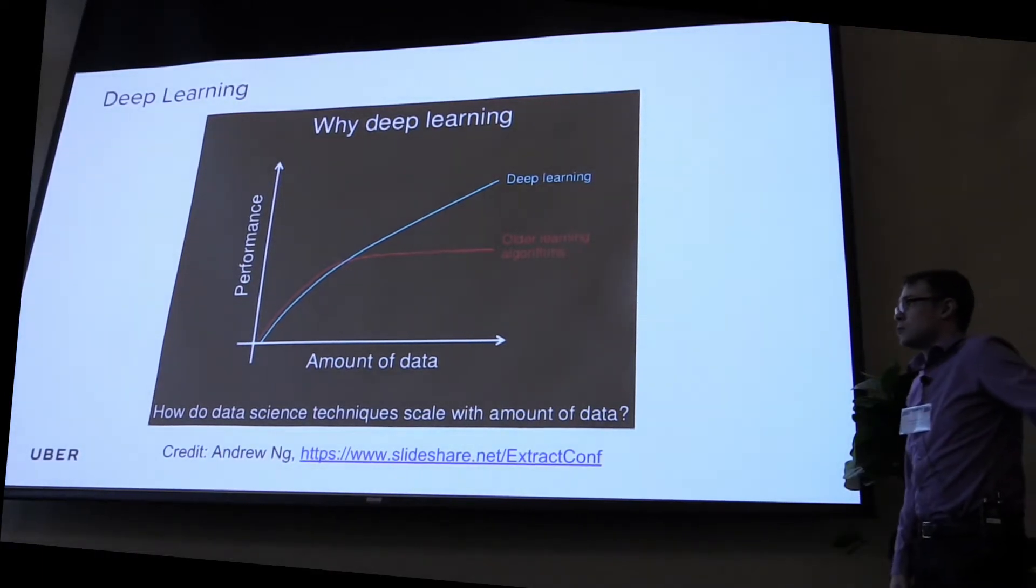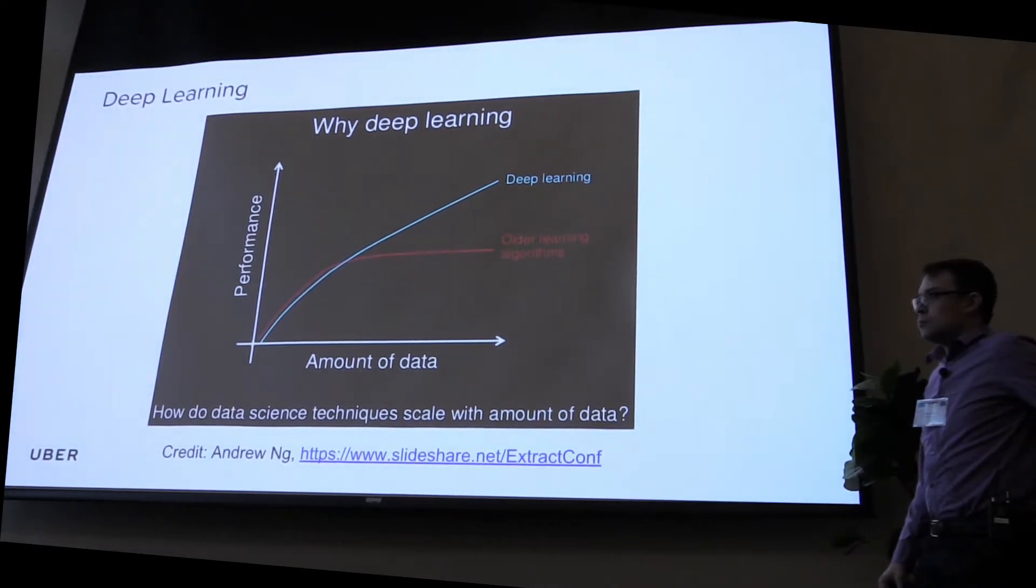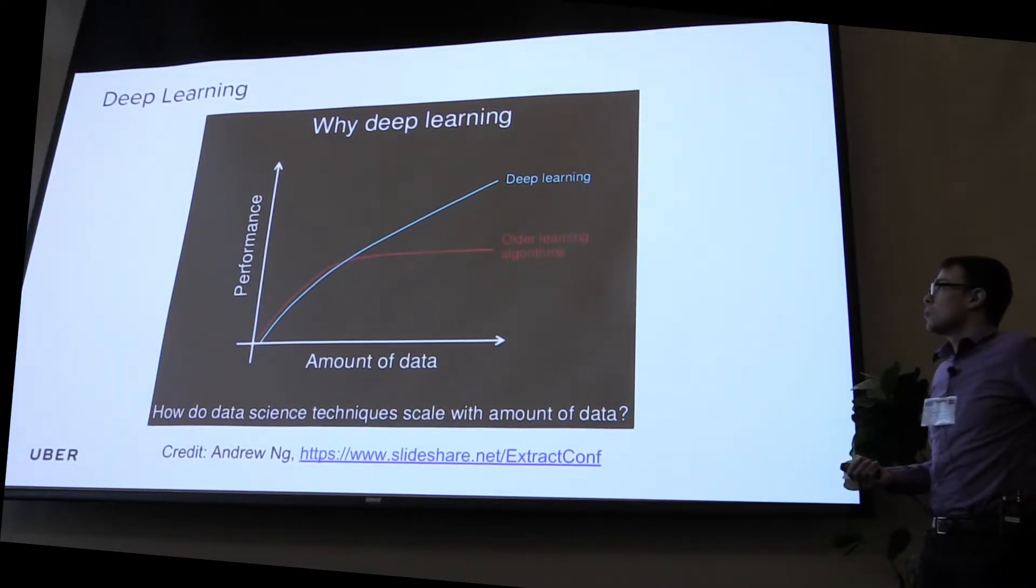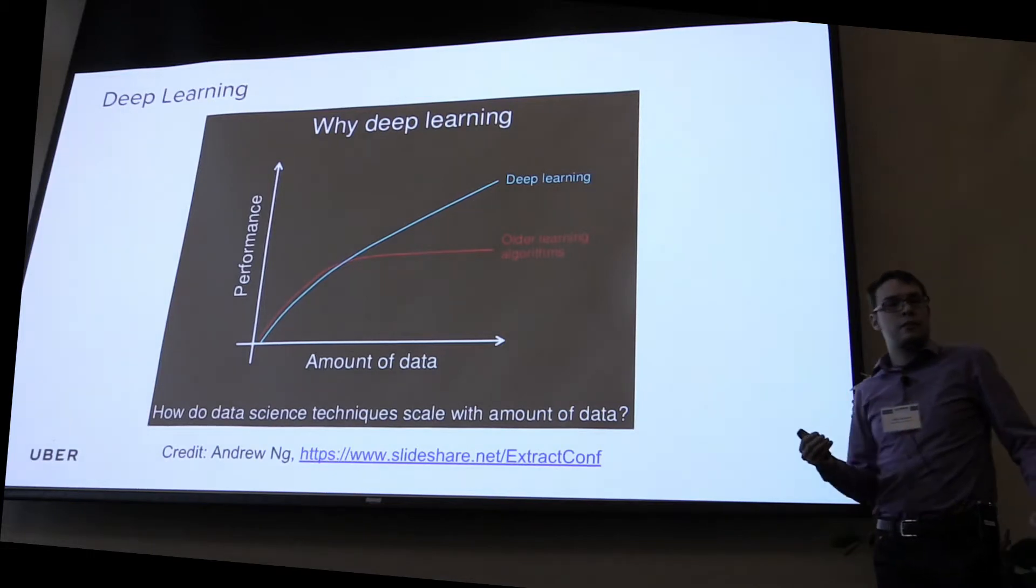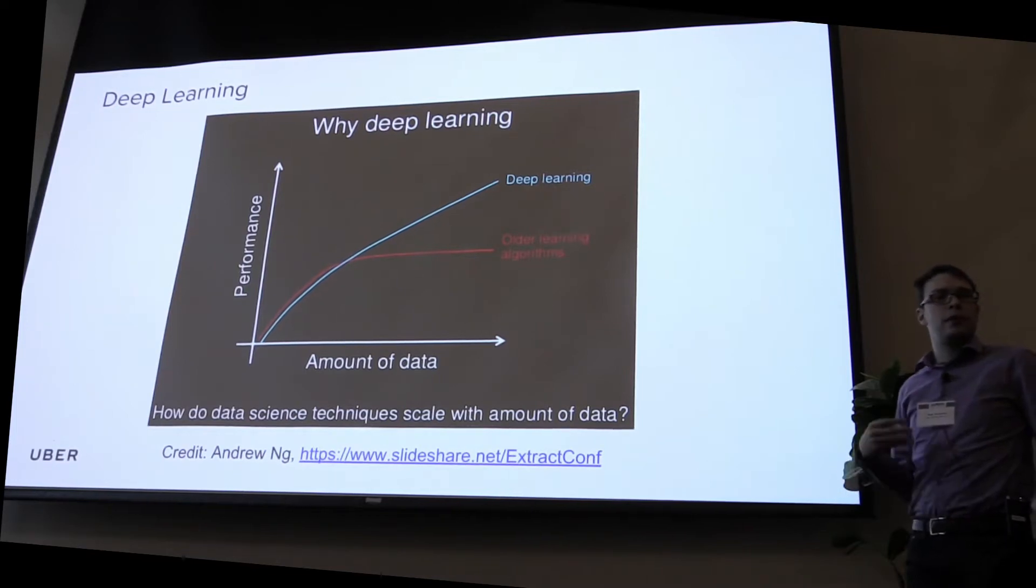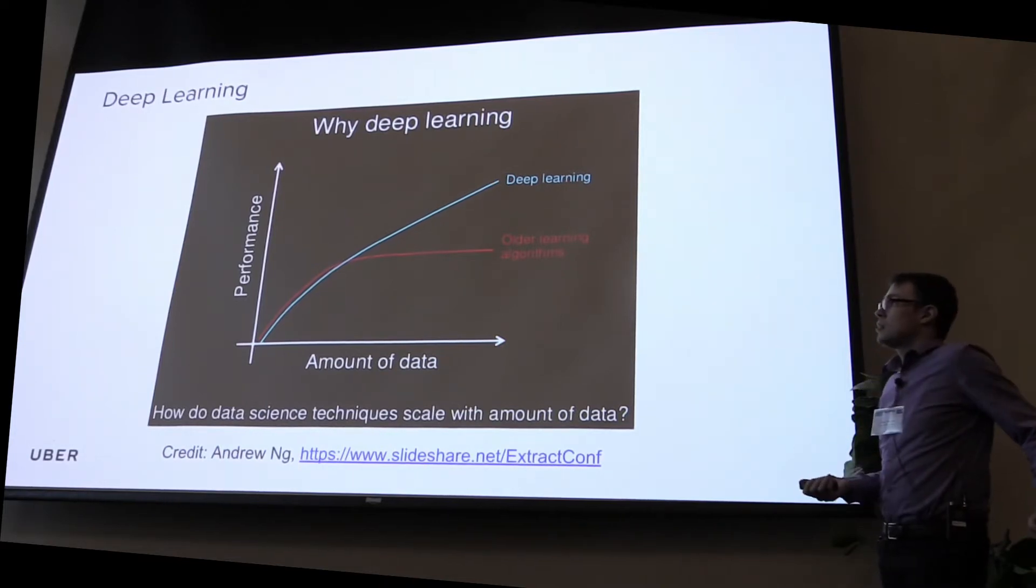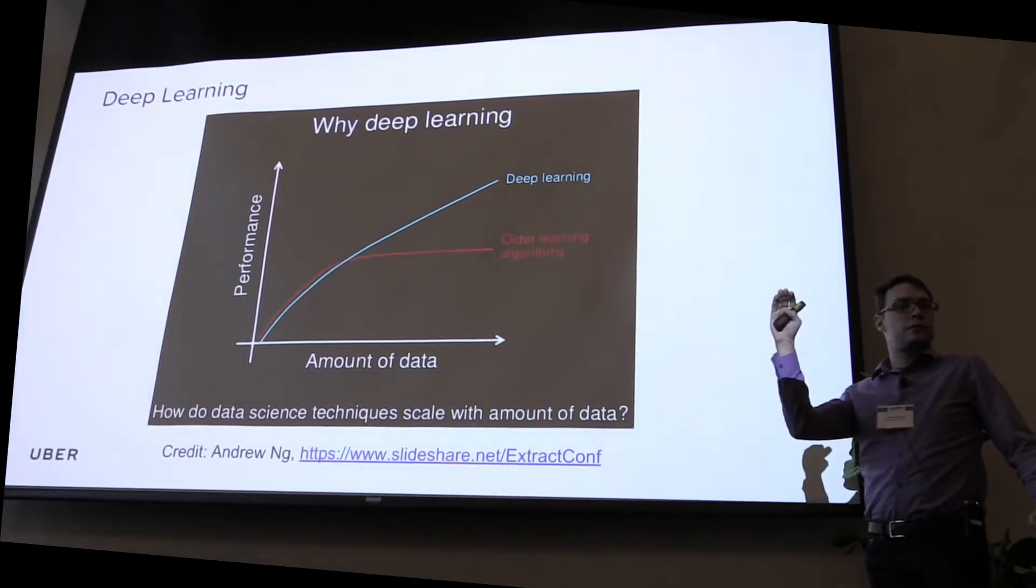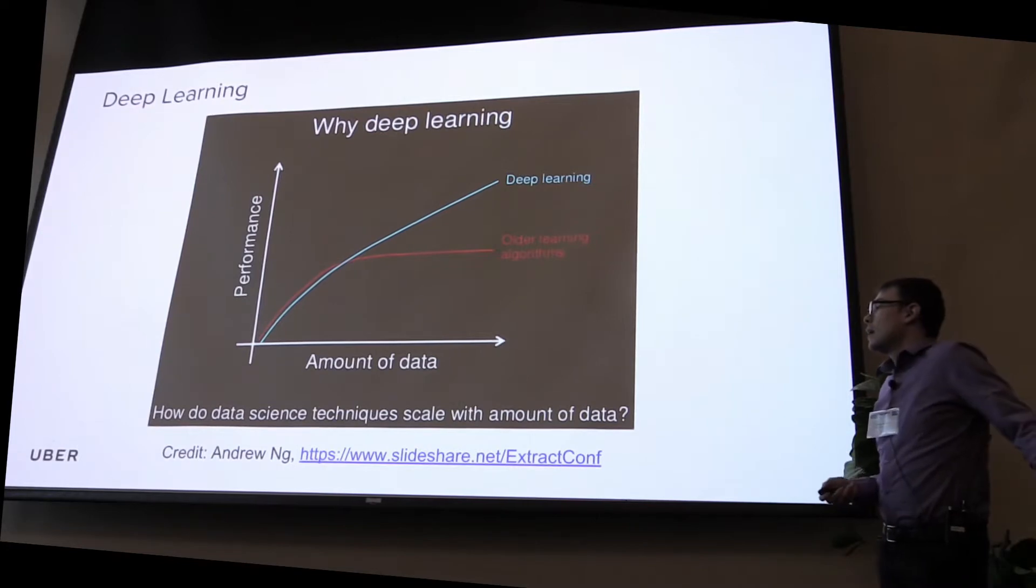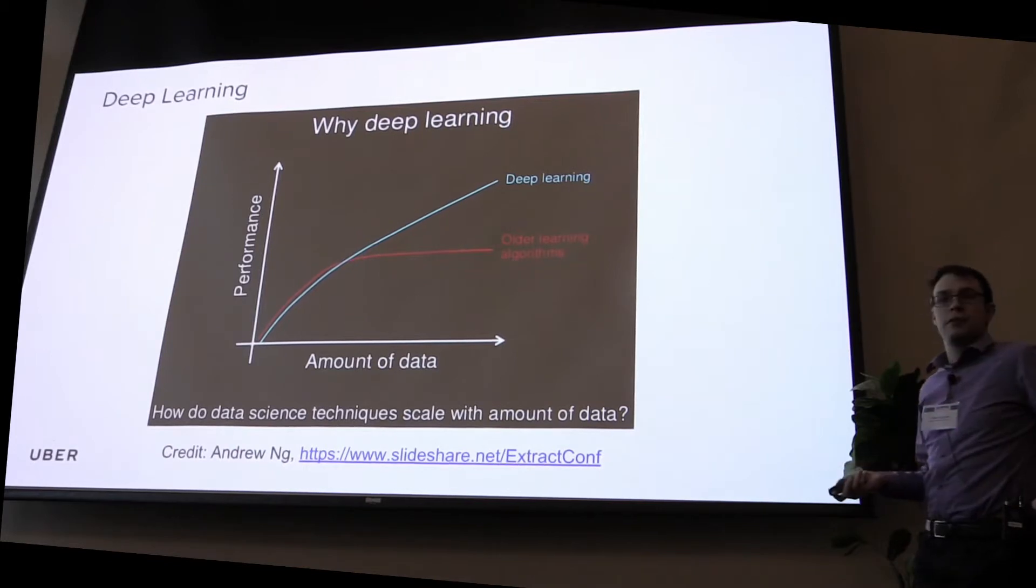This is one of the slides by Andrew Ng who is one of the deep learning superstars. He's basically arguing that if you grow amount of data which all the big companies these days are doing, efficiency of traditional machine learning algorithms starts to taper off. So even if you have much more data, your accuracy, your performance is not growing that much. And as companies started to adopt deep learning, what they saw is that you can get qualitatively better results with more data. And that's why a lot of industries right now are adopting deep learning and getting much better results than they were getting before.